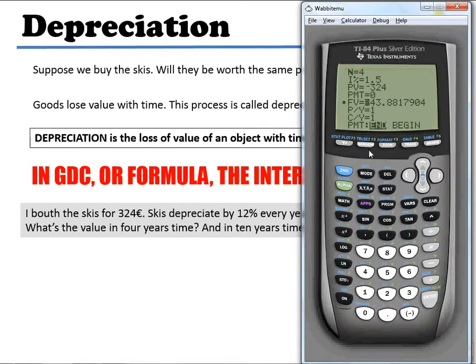Now in one year, at 12% loss, I just go down to my future value, press solve, and I'm going to get that the skis would now be worth 285.12. If it's going to be in four years, all I have to do is change my N. And the future value is going to be, let's see, alpha solve. Here we go, 194.13.